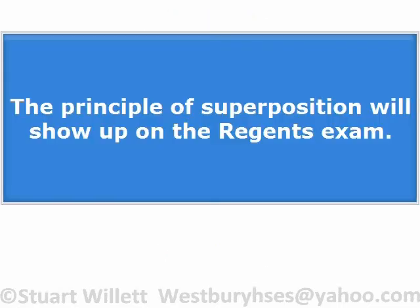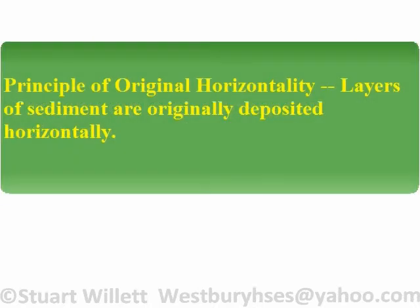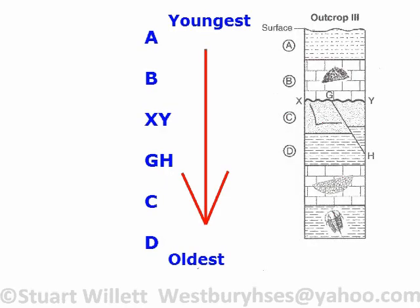The principle of superposition is going to show up on this test. They're always going to have some kind of cross-section or rock correlation, or at the very least they'll give you a multiple-choice definition for it. You'll also get the principle of original horizontality — layers of sediment are originally deposited horizontally, so if they're folded or faulted, that happened after the layer was deposited. I've put them in order for you, youngest to oldest. That's your answer right there.